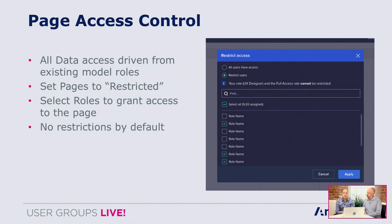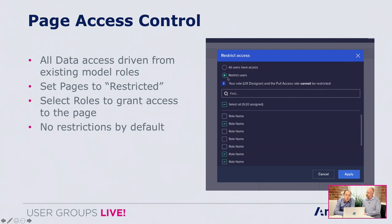The new user experience respects all permissions and access control from the model — from granular dynamic cell access through to selective access and module role access. If a card points at a module you don't have access to, you won't see data in that card. We're also adding a feature to restrict access to the page itself. By default all pages are available to everyone, but you can restrict a particular page by choosing 'restrict users' and ticking the roles within the model that you want to have access — then apply, and the page is restricted to those roles.